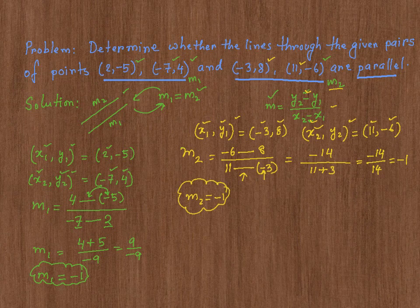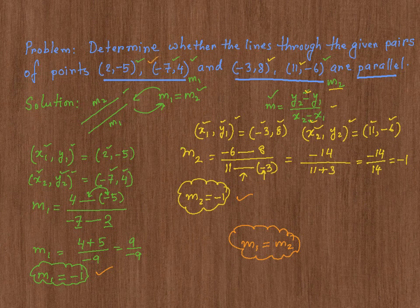Now let's look at M1 and M2. M2 is negative 1 and M1 is negative 1, so M1 is equal to M2, meaning that these slopes are equal. This means that the lines through these two points and the lines through these two points are parallel to each other. I hope that this discussion was helpful. Thank you very much.